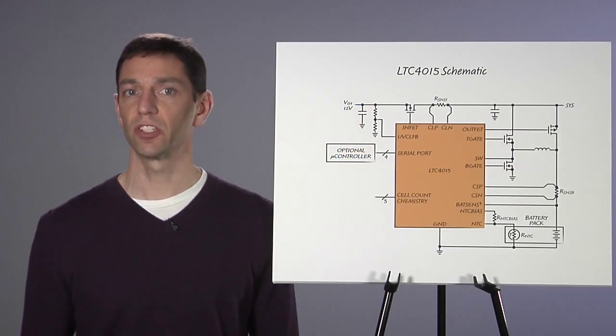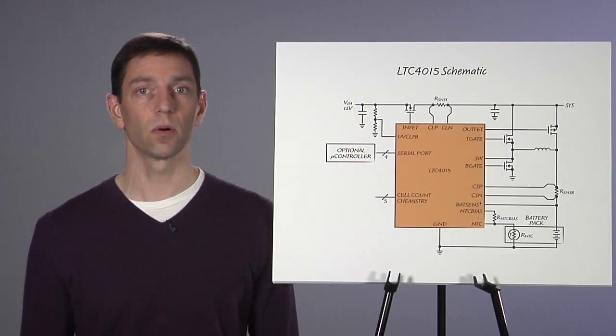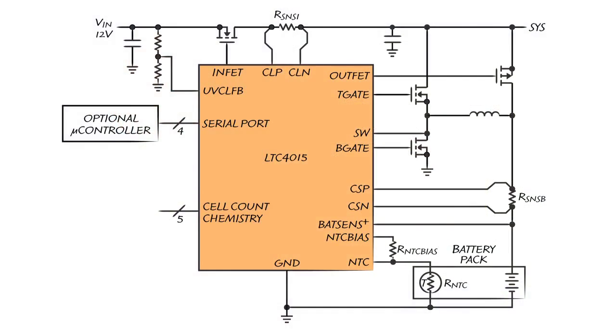To allow proper functionality from current limited or power limited supplies, the LTC4015 implements an input current limit. If the combination of the system load and the battery charge currents reaches the input current limit, then the charge current is automatically reduced to prevent an input overload condition.